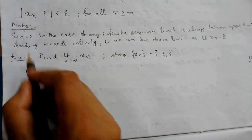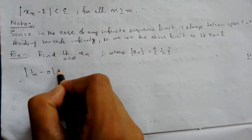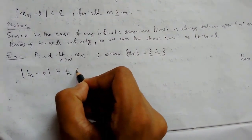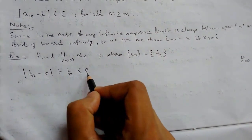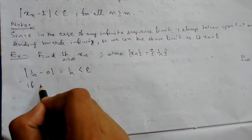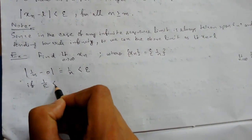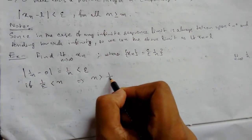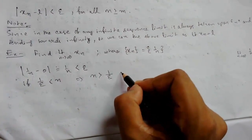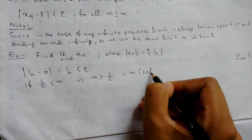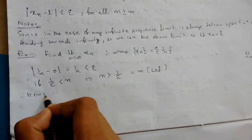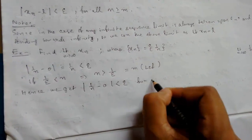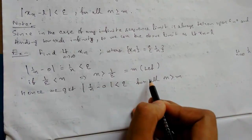Now we write the formal form: |x_n − L| = |1/n − 0| = 1/n, clearing the modulus. This must be less than ε. Now we check the condition: if 1/ε < n, then n must be greater than 1/ε. This is the same thing, so let us consider M = 1/ε.